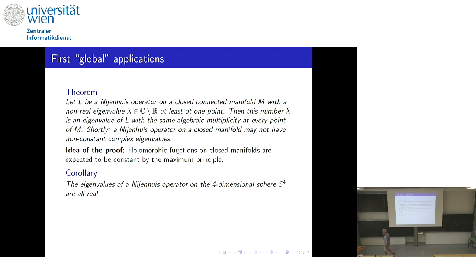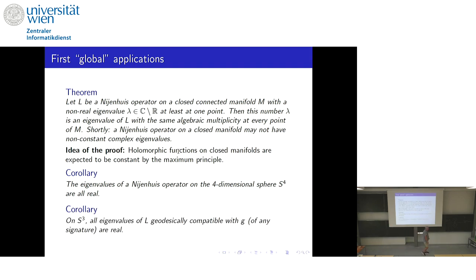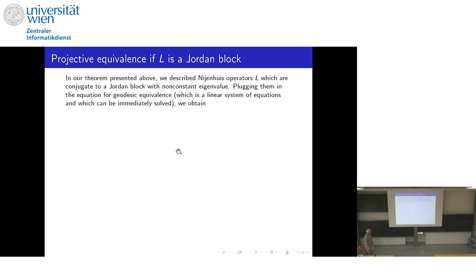As corollaries: eigenvalues of a Nijenhuis operator on a 4-dimensional sphere are all real — a purely topological statement. Topology is important; on other manifolds there exist Nijenhuis operators with complex eigenvalues. On the 3-sphere, all eigenvalues of L are real. This is a pure statement of Nijenhuis geometry without assumptions on anything else.